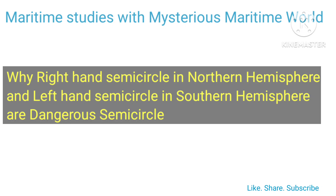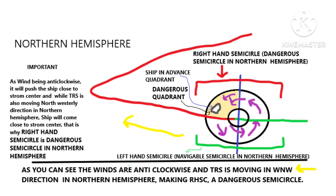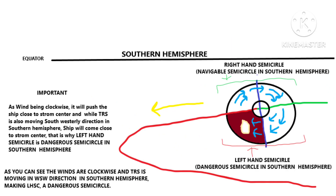Why is the right-hand semicircle dangerous in the Northern Hemisphere and the left-hand semicircle dangerous in the Southern Hemisphere? In the Northern Hemisphere, as the wind is anti-clockwise, it will push a ship closer to the storm center, and since the TRS is also moving in a northwesterly direction, the ship will come even closer to the storm center — that is why the right-hand semicircle is the dangerous semicircle. In the Southern Hemisphere, as the wind is clockwise, it will push the ship close to the storm center while the TRS moves southwesterly, making the left-hand semicircle the dangerous semicircle.